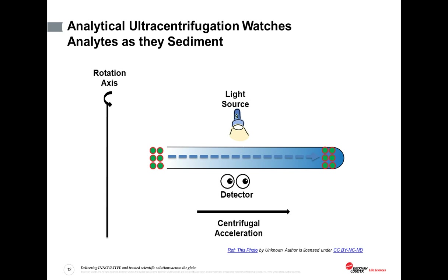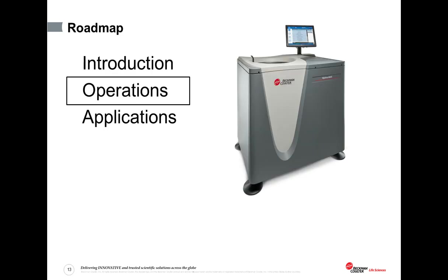To summarize: analytical ultracentrifugation takes a sample tube and spins it around the rotation axis very fast, subjecting everything inside to a very large centrifugal acceleration that is radially outward. As it does so, the analytical ultracentrifuge brings to bear an arrangement of detector optics which observes what happens to a given analyte over the course of the experiment — in other words, how it sediments to the bottom of the sample tube. This process of how it sediments is the information content of an AUC experiment, and that is what we end up analyzing mathematically.